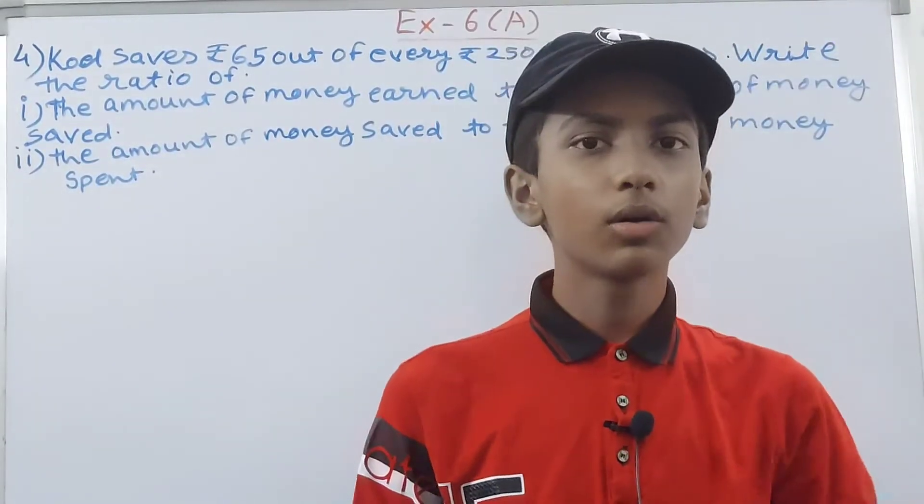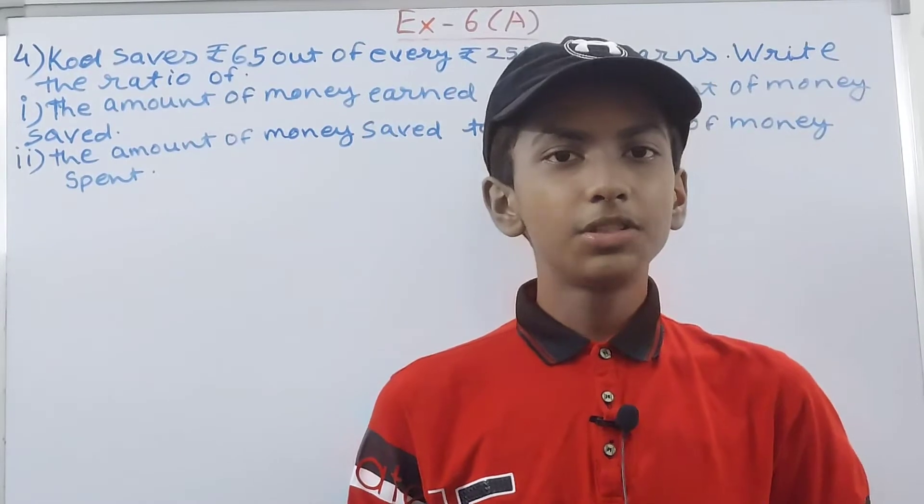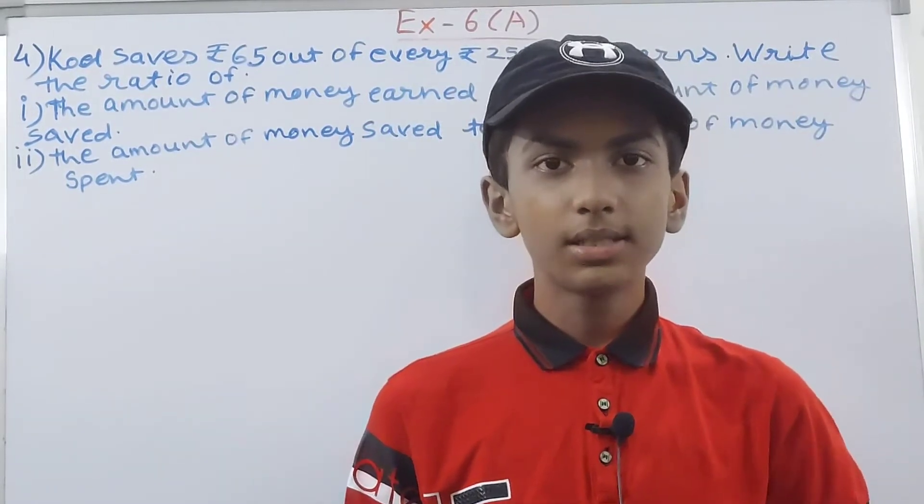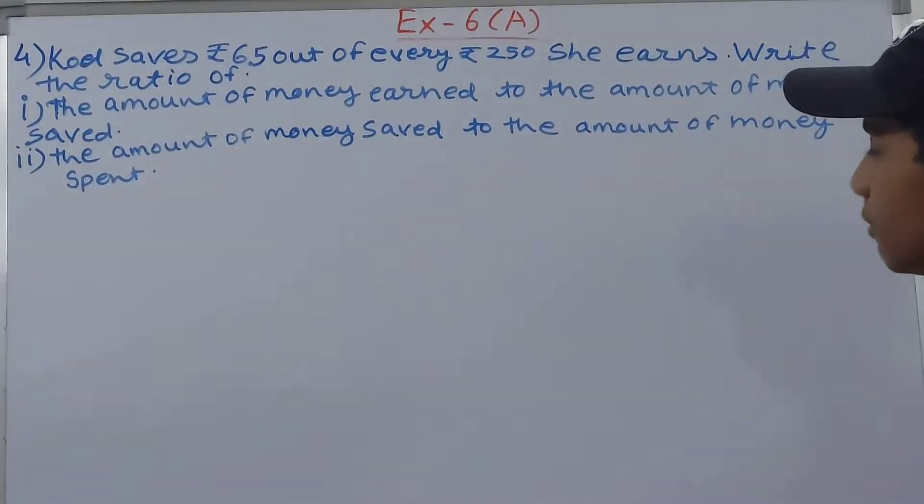Welcome back to my YouTube channel. In this video we are going to solve ICSE mathematics class 7 chapter 6 ratio and proportion exercise 6A question 4. Koel saves 65 rupees out of every 250 rupees she earns.